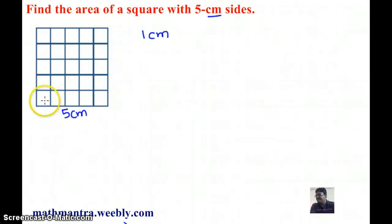length 1 centimeter, so I will get 5 squares on this side. Similarly, this is again 5 centimeters, so I get 5 squares over here. This way I have filled the whole square with small squares of length 1 centimeter.